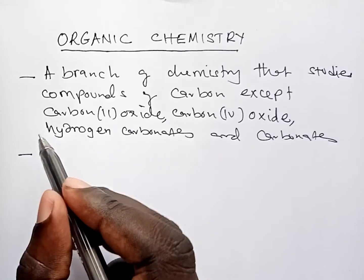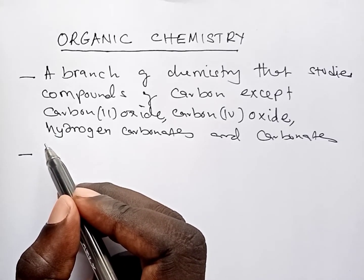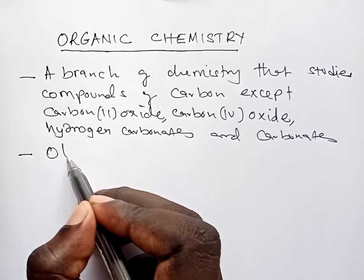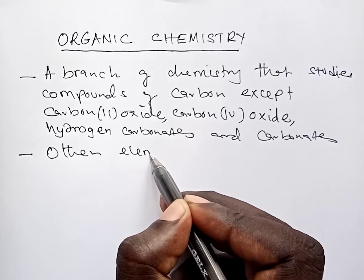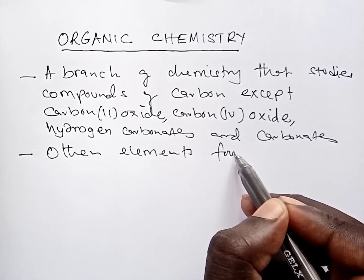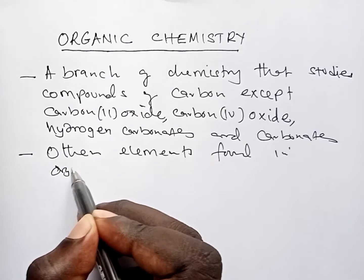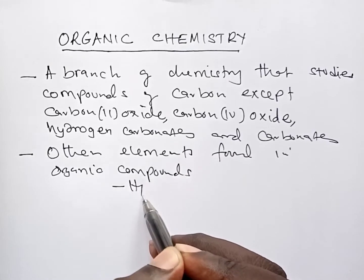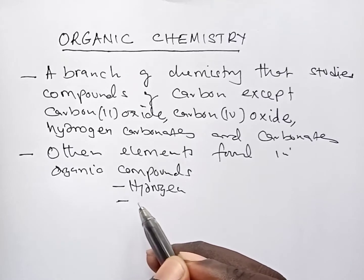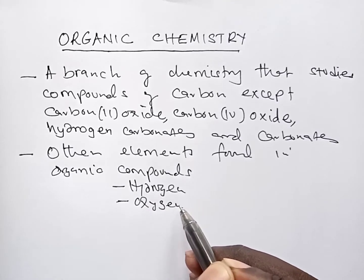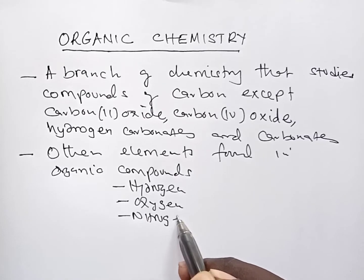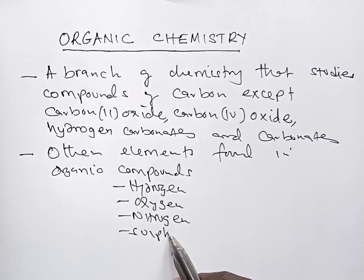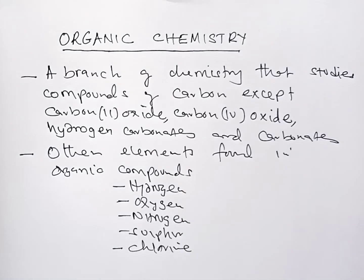Apart from carbon, we do have other elements that are found in organic compounds. These elements include hydrogen, oxygen, nitrogen, sulfur, and chlorine. So apart from carbon, these are also some of the elements that we find in organic compounds.